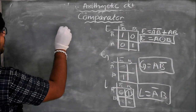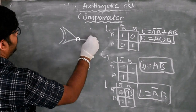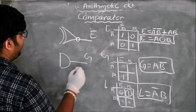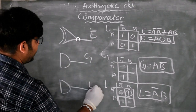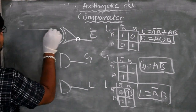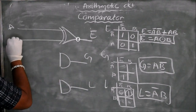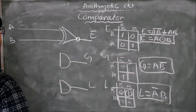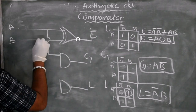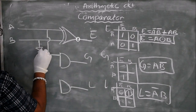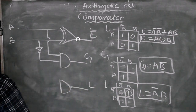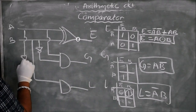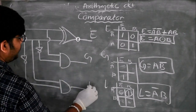Now let us design the circuit for the magnitude comparator. I take an XNOR gate — this gives the Equal output. I take an AND gate for Greater, with inputs A and B-bar. I take another AND gate for Less, with inputs A-bar and B. So the three outputs are: Equal = A XNOR B, Greater = AB̅, and Less = A̅B.